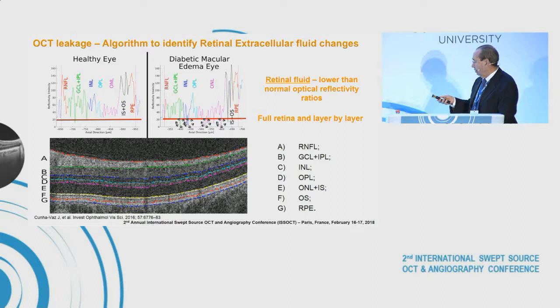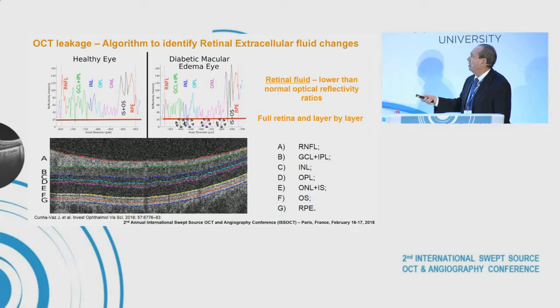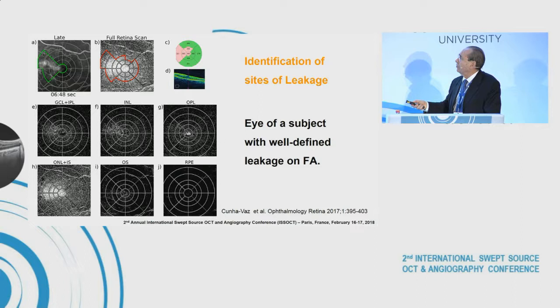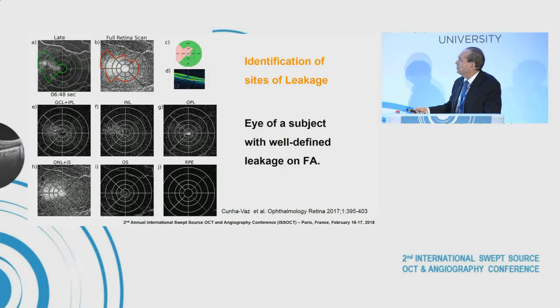With OCT leakage, you are looking at sites of very lower than normal optical reflectivity. These are eyes without any cyst formation — just increased retinal thickness, increase in extracellular fluid — and you can do it layer by layer. You end up with images where you can compare fluorescein angiography, showing a diabetic eye with localized leakage extending around an area, and comparing with OCT leakage, which finds an even larger area in the same location, identifying very well the increase in extracellular fluid in the outer plexiform layer, inner nuclear layer, and outer nuclear layer.